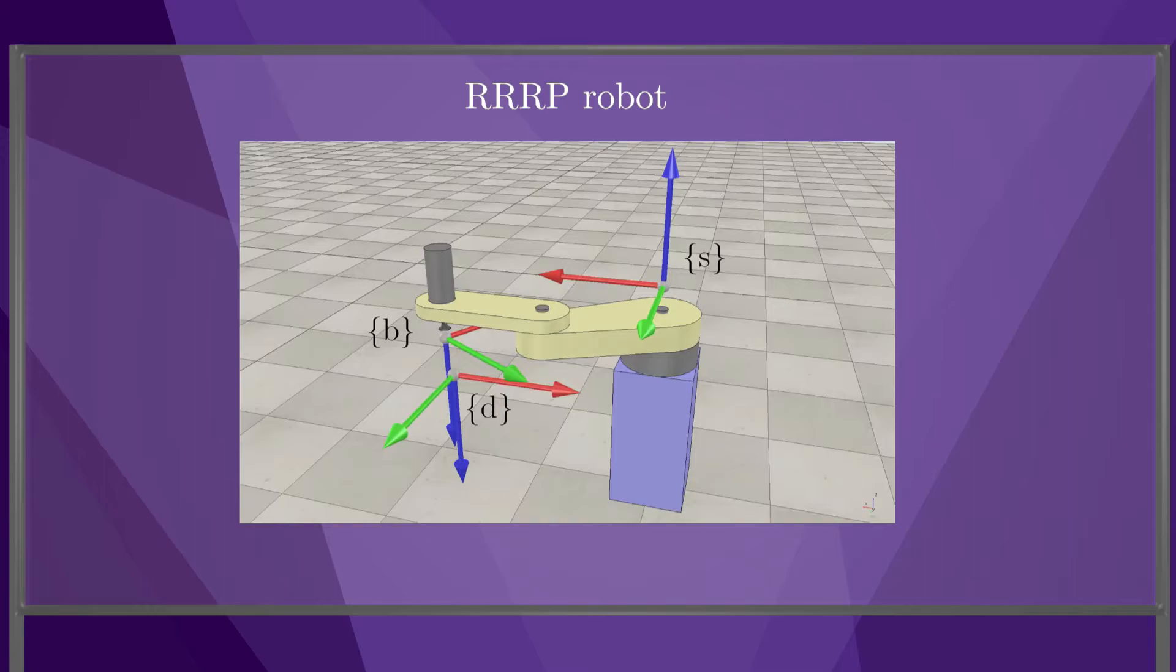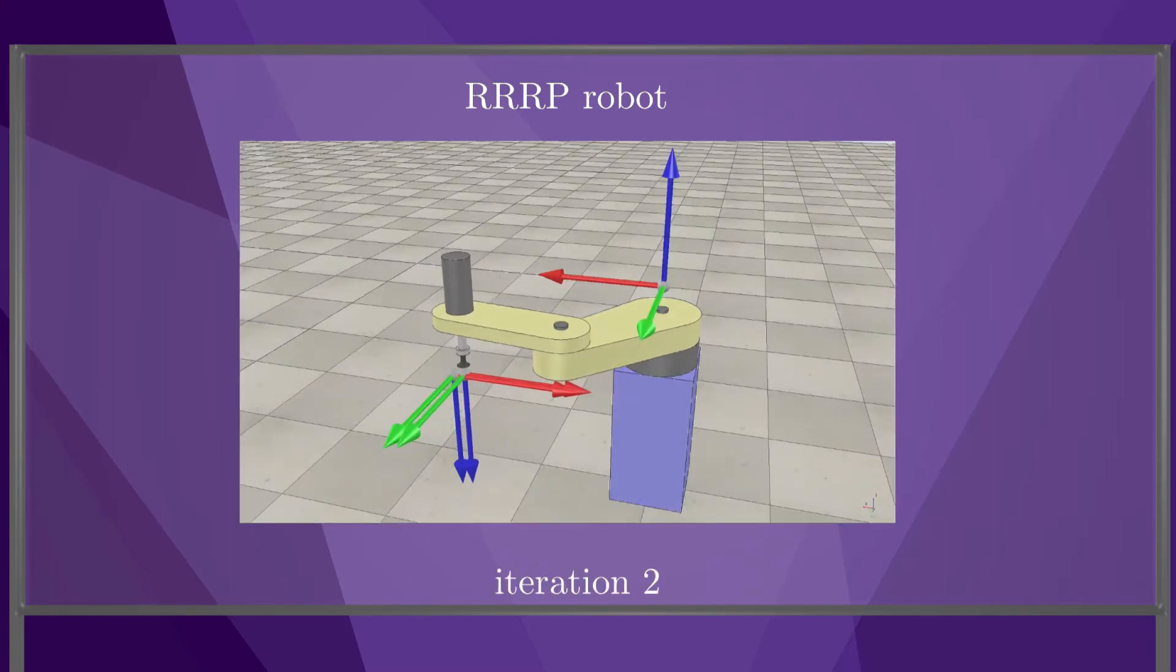Let's animate the robot to show the joint angles found at each of four iterations of the Newton-Raphson algorithm. This is iteration one, then two, then three, and then four.